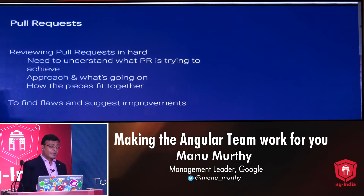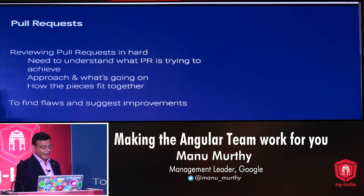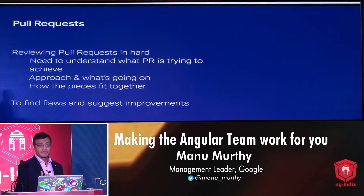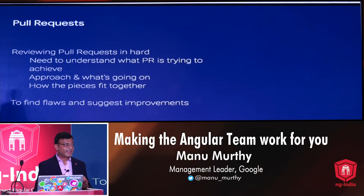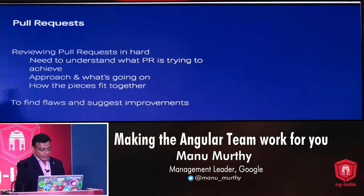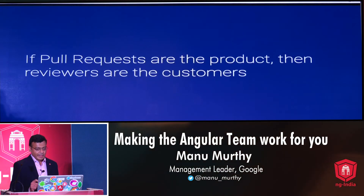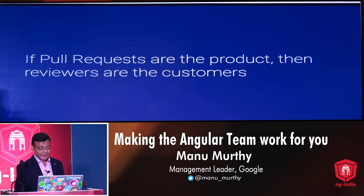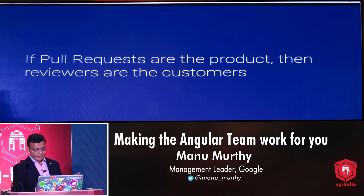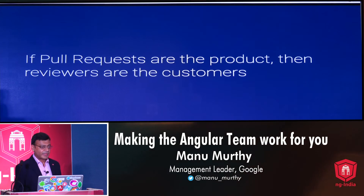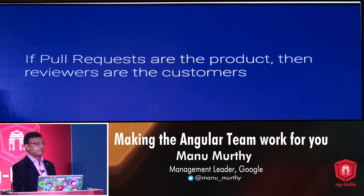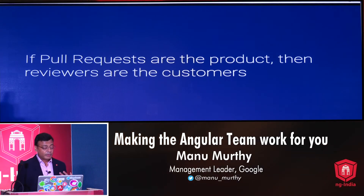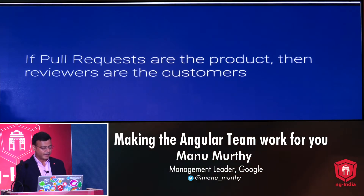Reviewing a pull request is very, very hard. The reviewer needs to understand what the pull request is attempting to do, get a good handle on the approach and how all the pieces fit together, before they can find meaningful flaws and make improvement suggestions. I'd like you to think about pull requests with a product management hat on: if pull requests are the product, then the reviewers are the customers. We want our customers — our reviewers — to buy or approve the pull requests. Have we made life easy for them the way we would if we were selling a product?